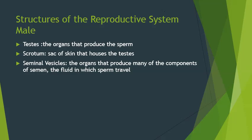The seminal vesicles produce most of the fluid that is semen. Semen is the protective mucus fluid that aids the sperm in leaving the body.